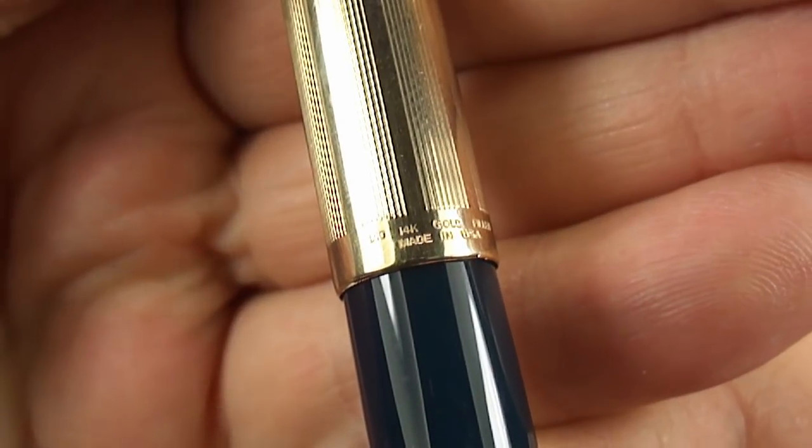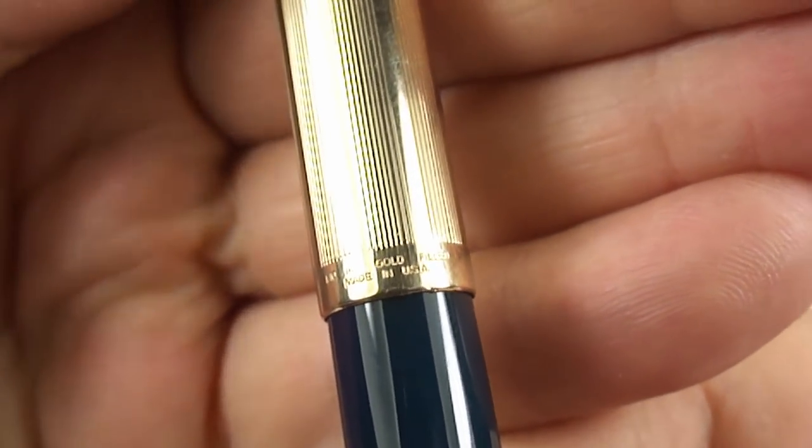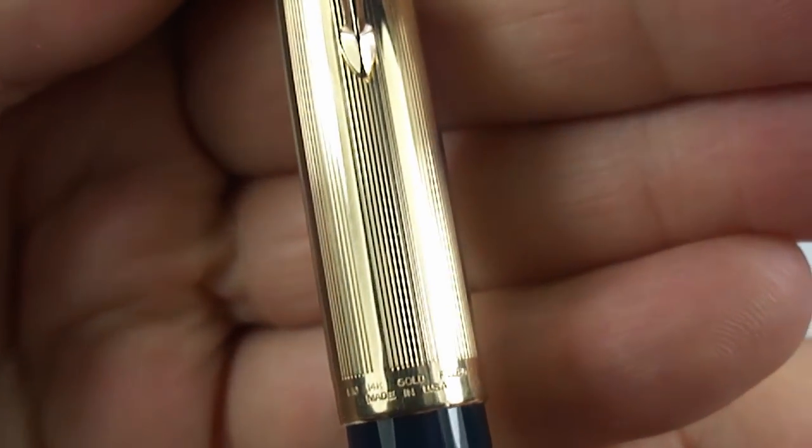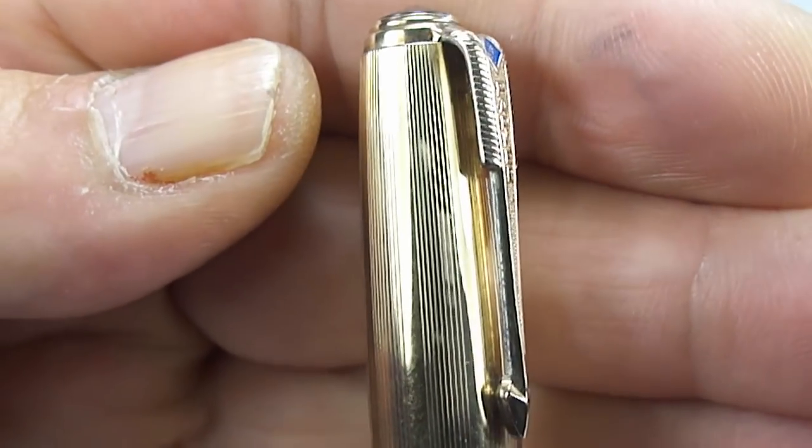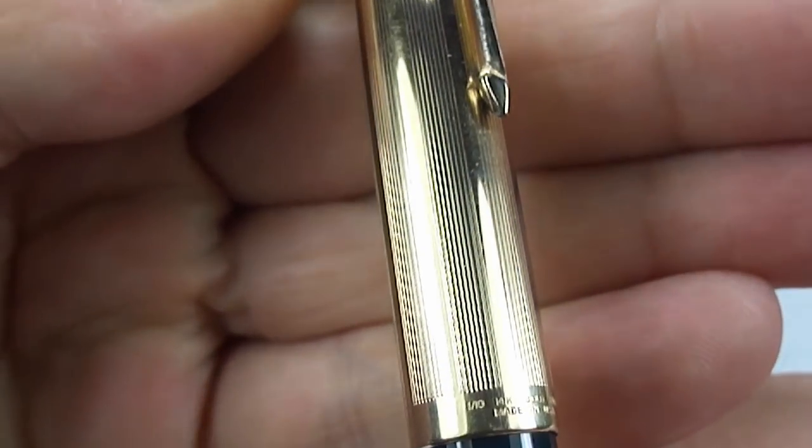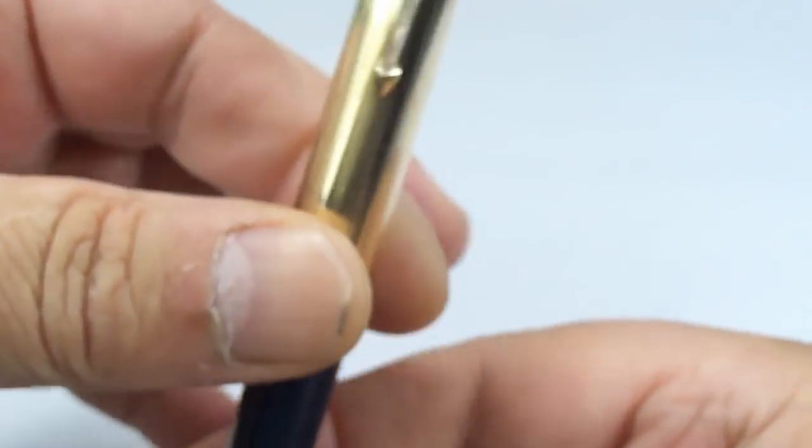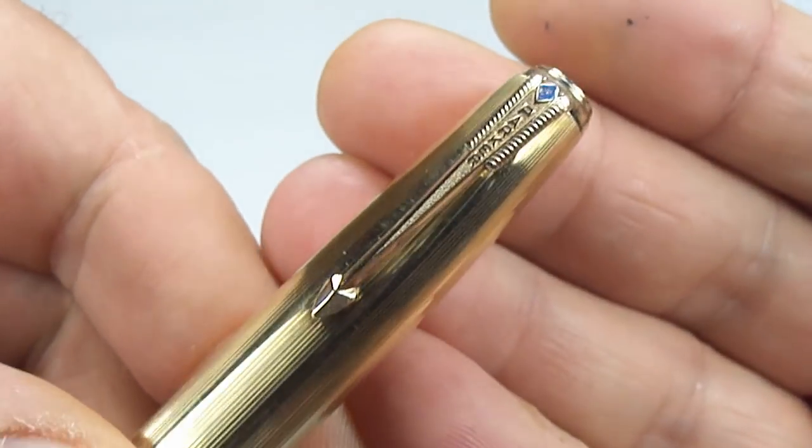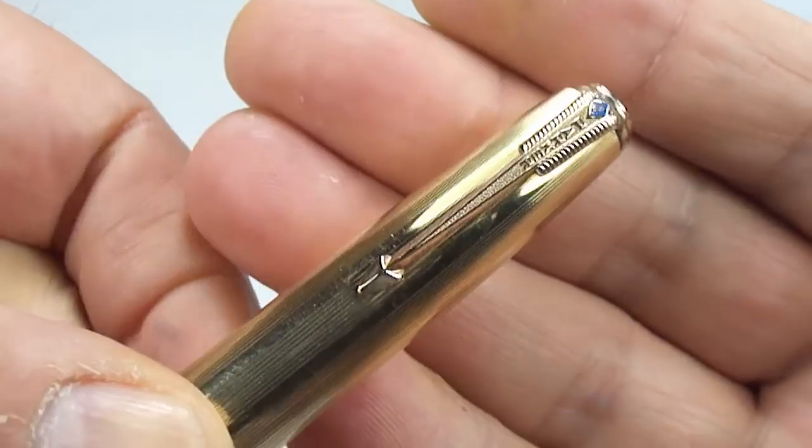And then just underneath there, it says made in USA. And you can see the pattern is these lines running the length of the cap. Absolutely lovely. You can see the very recognizable Parker arrow clip there. There's a sideways view.